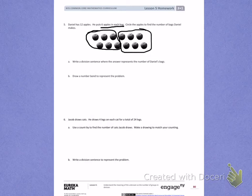Letter A. Write a division sentence where the answer represents the number of Daniel's bags. I started with 12 apples, that's my total. I divided those apples into groups of 6. My answer needs to be the number of Daniel's bags, which is 2. He has 2 bags or 2 groups of apples.